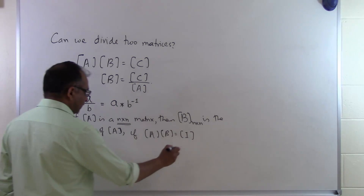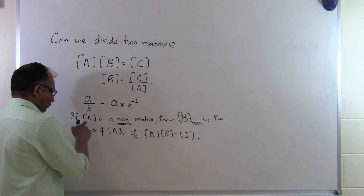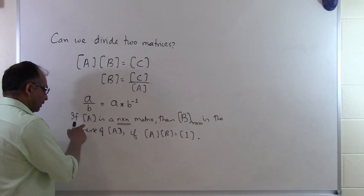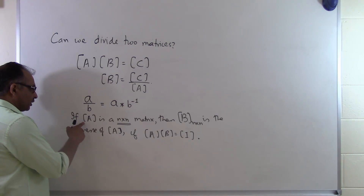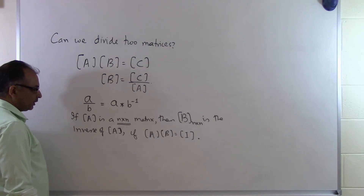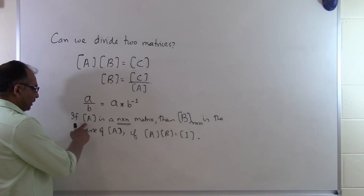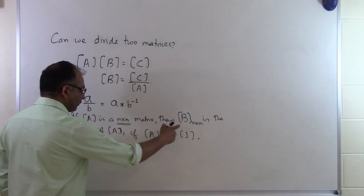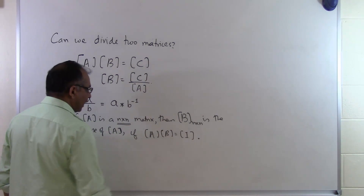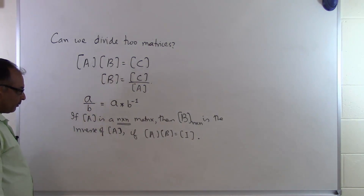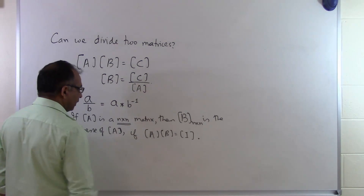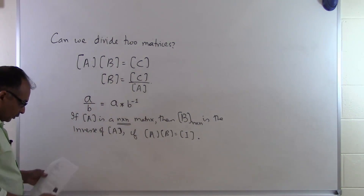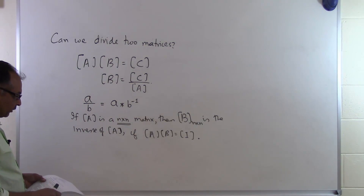Keep in mind that the inverse exists only for square matrices. Furthermore, the inverse does not exist for every square matrix. Whenever somebody gives you a square matrix, you won't always be able to find another square matrix B such that A times B equals the identity matrix. That's the definition of the inverse of a matrix.